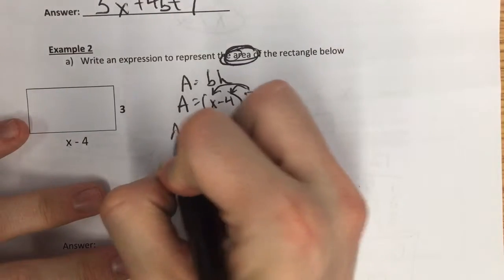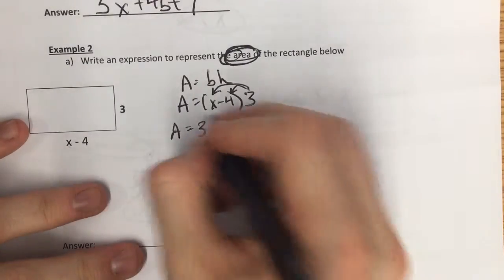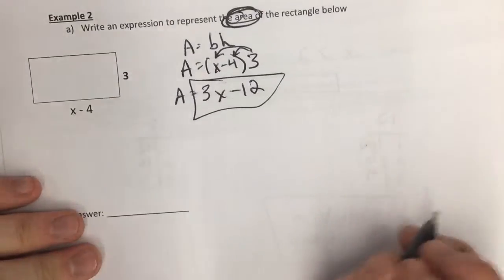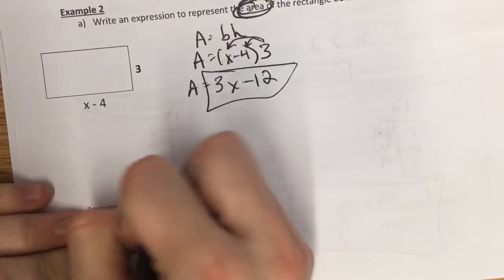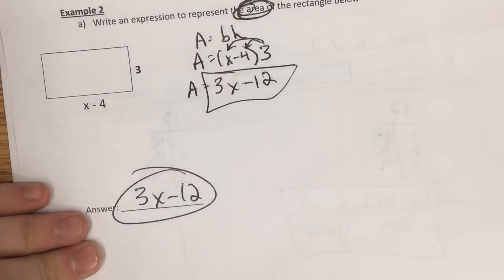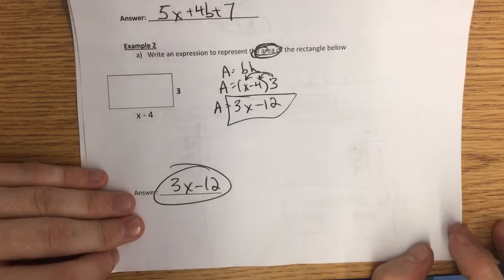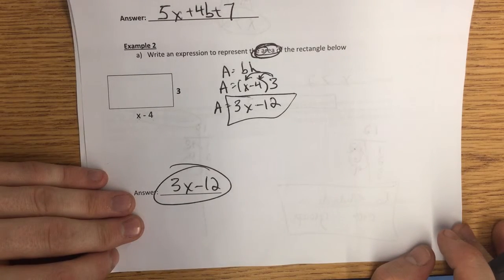3 distributes to the parentheses. I have 3 times x, which is 3x. 3 times 4, which is minus 12. So our area is 3x minus 12. Again, pause, rewind if you need to. Your teachers will have all the answer keys so they can check your work. Good luck. Tomorrow's the big day. You're going to rock it.